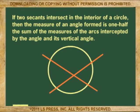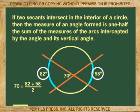If two secants intersect in the interior of a circle, then the measure of an angle formed is one-half the sum of the measures of the arcs intercepted by the angle and its vertical angle.